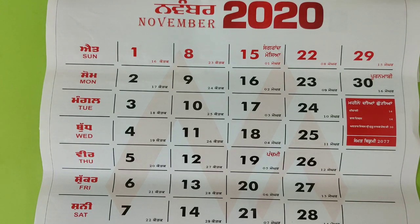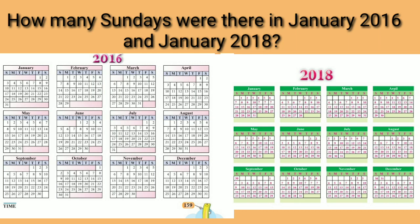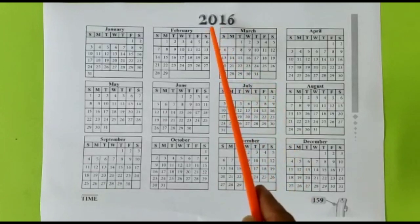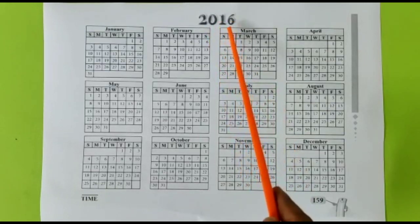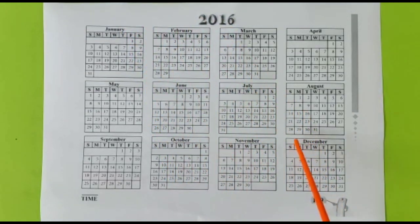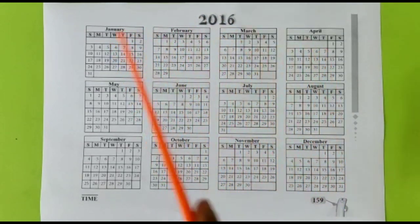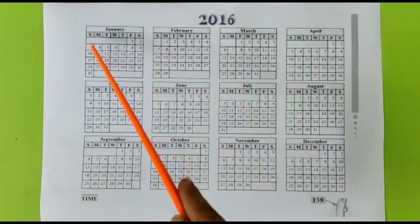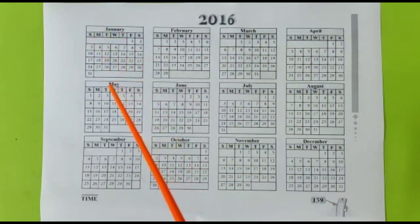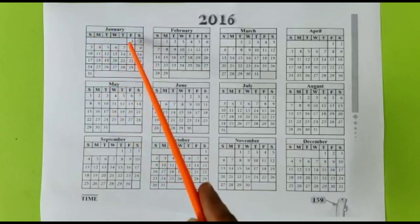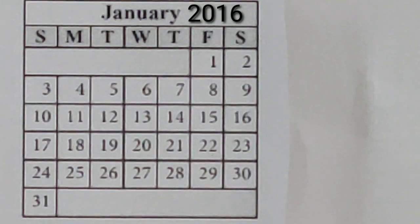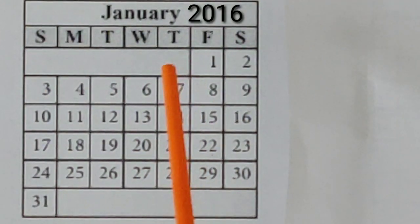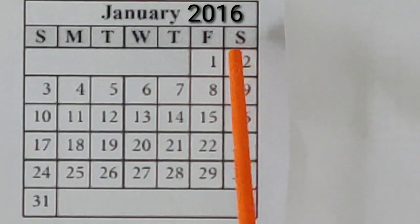Now let's solve some more questions based on calendar. Our first question is how many Sundays were there in January 2016 and in January 2018? Here we have a calendar of 2016 in which months are written from January to December. In every month's calendar, days of the week are written, and under the names of days, dates are written — for example, on 1st January 2016 the day was Friday. Here we have a calendar of January 2016. Now let's count the number of Sundays in January 2016.